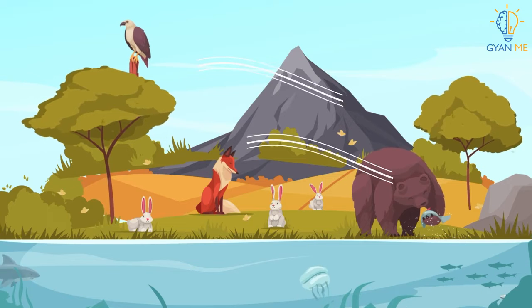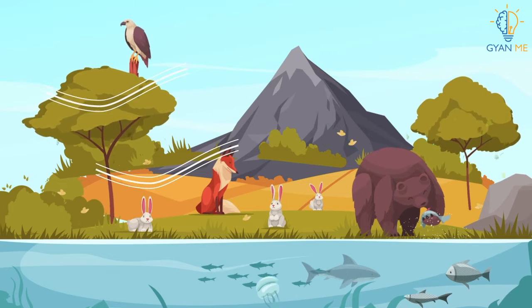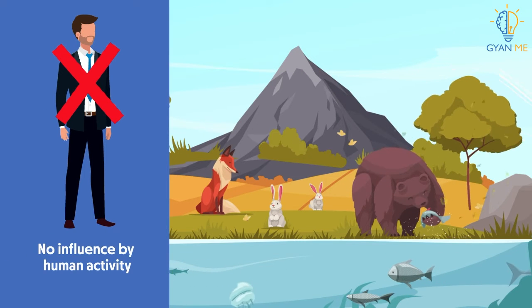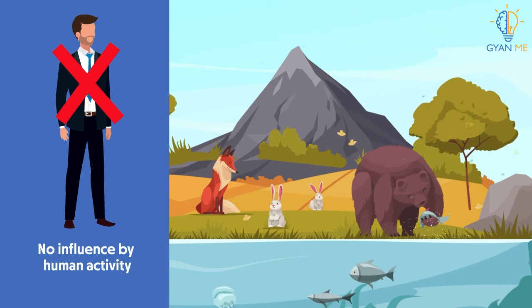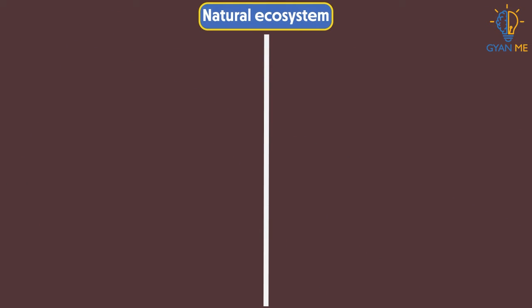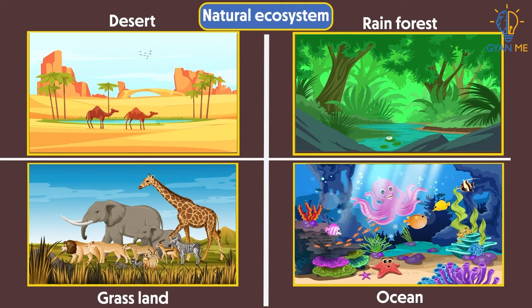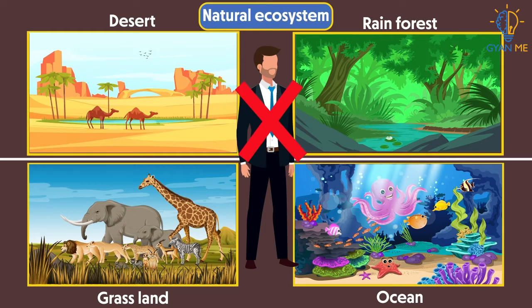Natural ecosystem is also made up of living components and non-living components. Their interactions are in no way influenced by human activities, as seen in the case of artificial ecosystems. Examples of natural ecosystems are deserts, rainforests, grasslands, oceans, etc. Note that most of them are majorly devoid of human existence and interference, thereby enabling these sites to continue existing in the natural state without any modification.